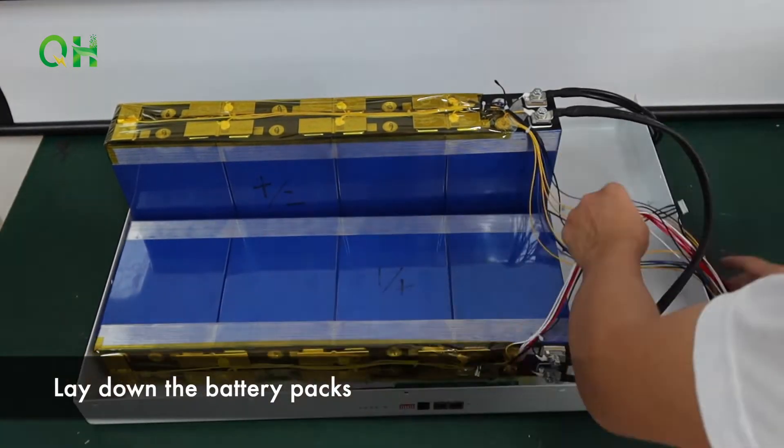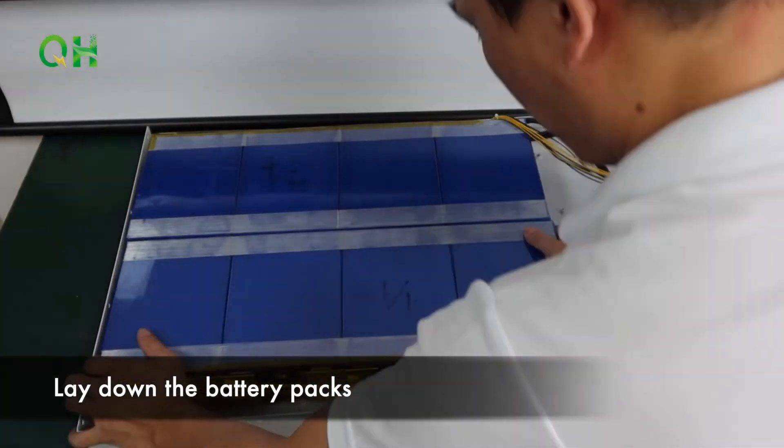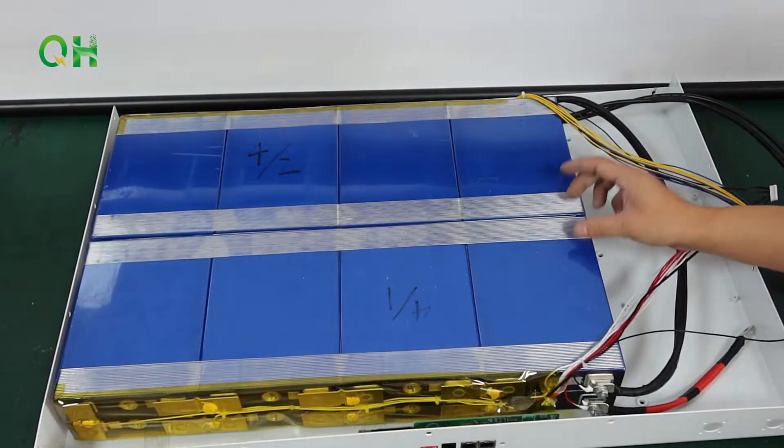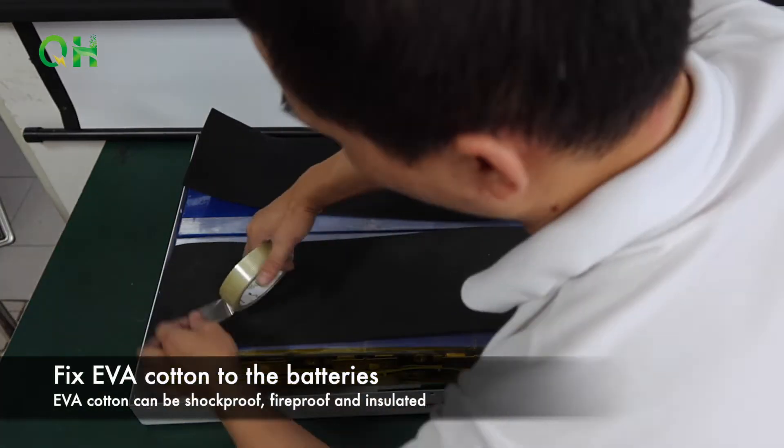Lay down the battery packs. Put a positive port between the batteries. Fix EVA content to the batteries.